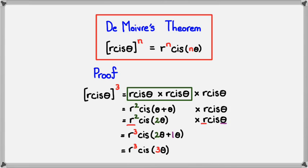Simplifying this, we get r cubed cis 3θ. So from this we can see that when we have r cis θ to the power of 3, we get r cubed cis 3θ. And that's where De Moivre's Theorem comes from — when you have it to the power of n, then it'll be r to the power of n, cis nθ.